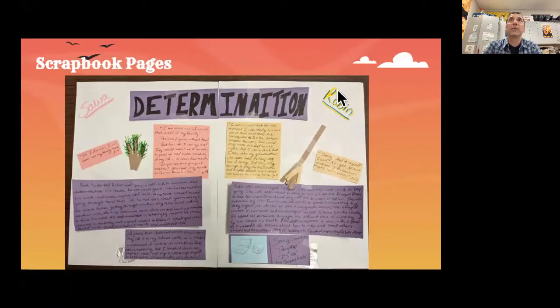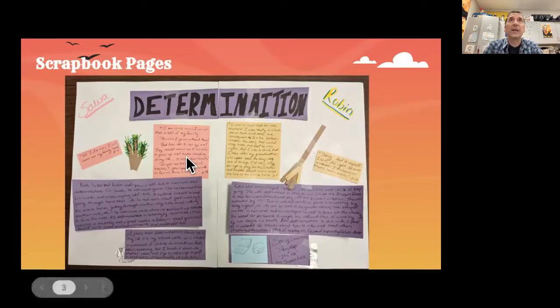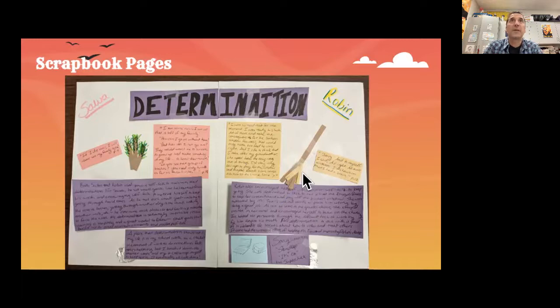Here's one that compares two different books. It's Salva from A Long Walk to Water, which is just an example I'm using because you're familiar with it, and a book called Angelfish, the main character Robin. Now, as I was collecting notes, I noticed some similarities after a while. I noticed that both Salva and Robin relied on a lot of determination to get where they needed to go in their book. So on this side of the page, as you can see, this represents Salva, and the right side represents Robin.